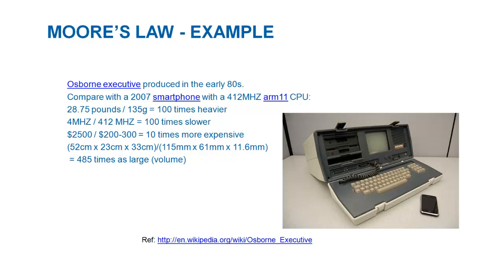The Osborne Executive is also 400 times heavier than the iPhone. What this means is that between the 1980s and 2007, transistor density increased dramatically — the entire Osborne Executive's functionality can fit into a volume 400 times smaller.